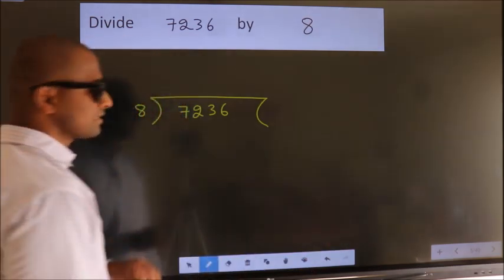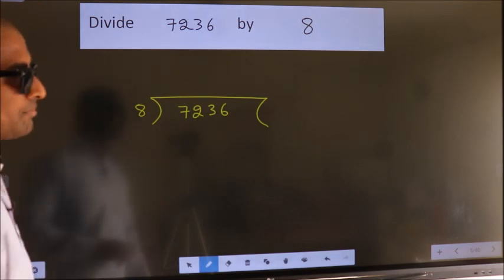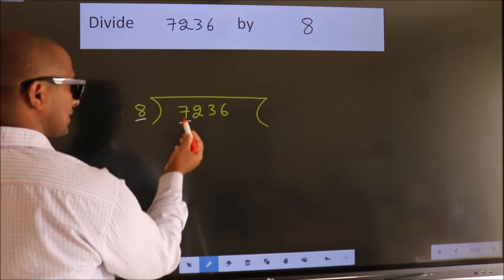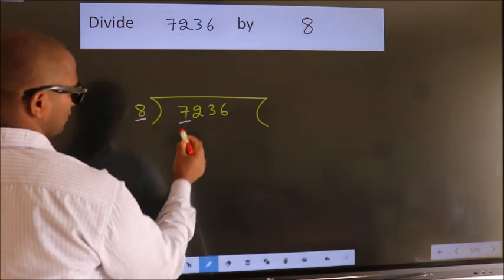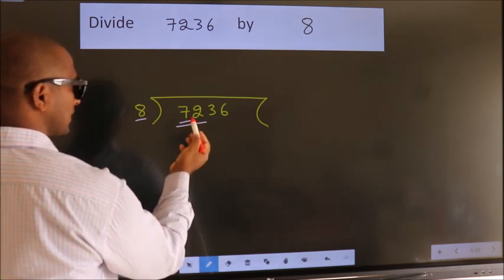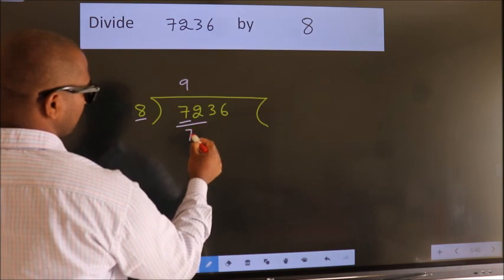This is your step 1. Next, here we have 7, here 8. 7 is smaller than 8. So, we should take two numbers, 72. When do we get 72 in 8 table? 8 nines 72.